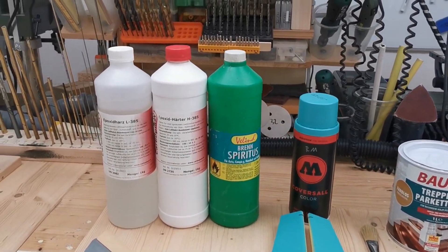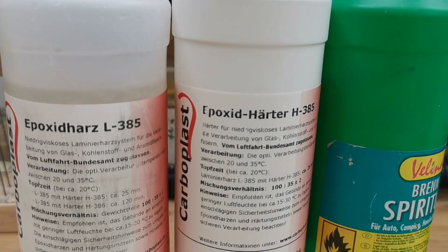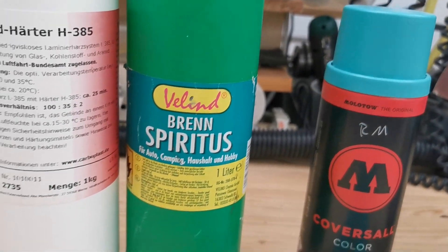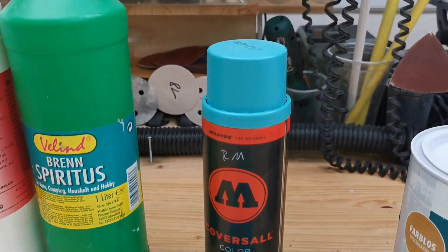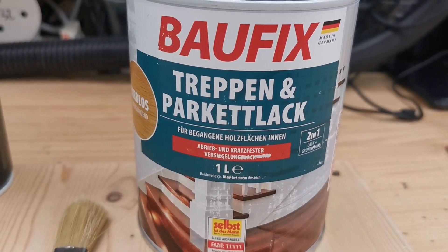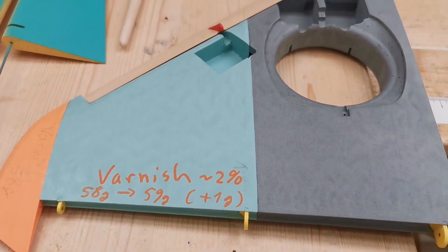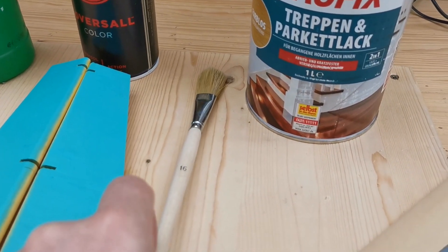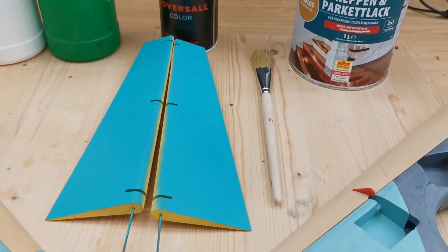And here we can see all the materials I use for this experimental video. First resin, the epoxy resin L385, the epoxy hardener H385, the spiritus, just normal burn spiritus. Then this covers all color from Molotov spray paint, acrylic spray paint. And this Trapen parquet lac or varnish in English for applying here on the wing. I was using this brush, this is a good quality brush, size 16. This means the width on the front. And that's it.